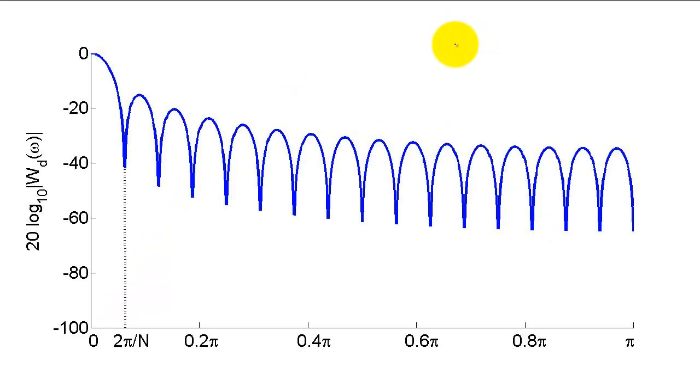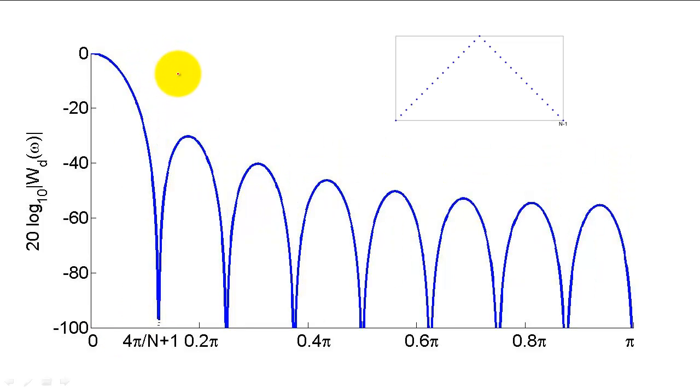For the sake of comparison, let's remember that the main lobe and side lobes of the rectangular window looked like this. Now, the main lobe and side lobe of the triangular window would look like this.